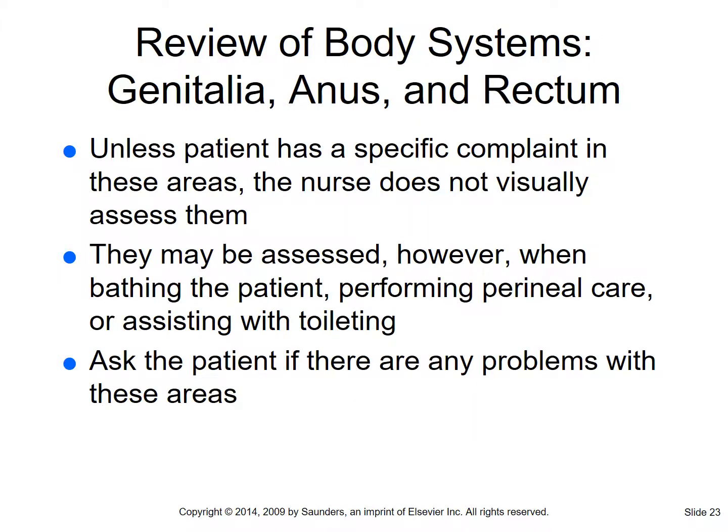For reviewing the genitalia, anus, and rectum - unless there's a specific complaint in that area, you don't have to visually assess every patient. If you're doing peri care or assisting with toileting you can get your assessment in then. Ask the patient about any problems in that area. Look for rashes, discharge, odors, lesions. Ask about last bowel movement, what it looked like, frequency, any burning with urination, frequency at night, any hematuria or blood in the urine.